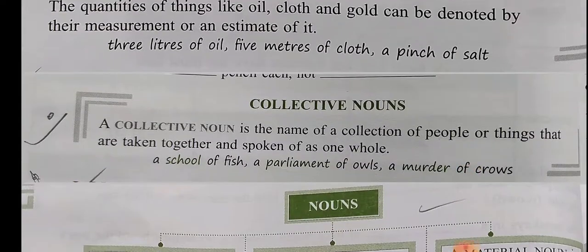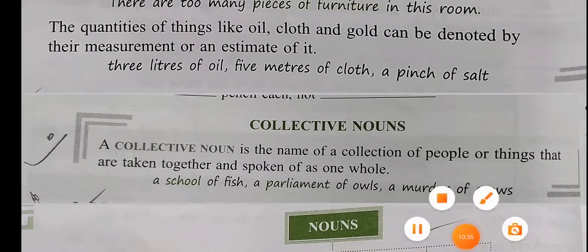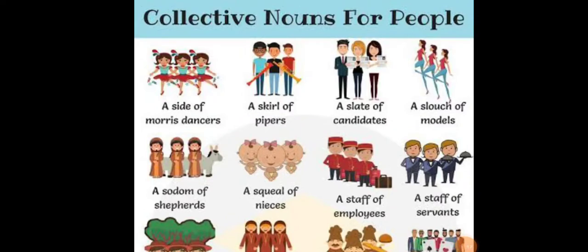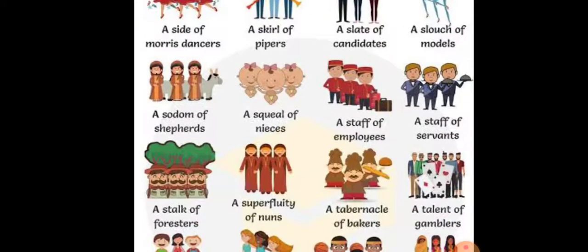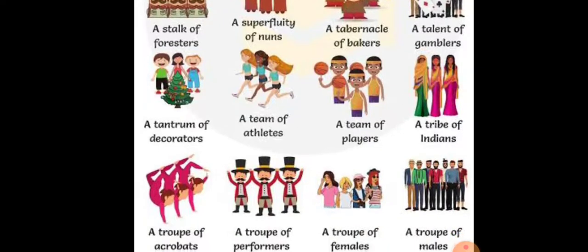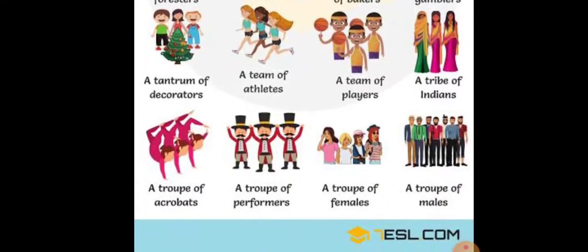Now, collective noun. What is a collective noun? Let us understand through this picture — a collection of things. A collective noun is the name of the collection of people or things that are taken together and spoken of as one whole. For example, a school of fish, a parliament of owls, a murder of crows, etc. A group of people. A team of athletes. A team of players.